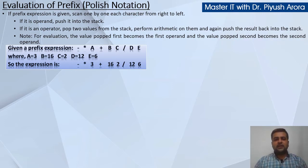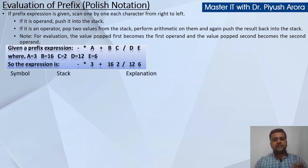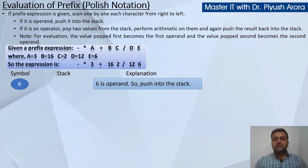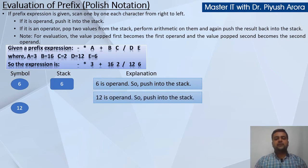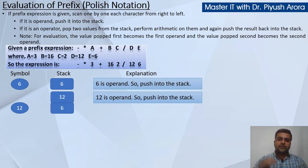It is very simple — step by step dekhenge, aapko samajh mein aa jayega. Symbol, stack, and explanation — aise teen columns bana lijiye. Ek ek symbol hum scan karte jayenge. The first symbol is 6 — 6 is operand, so you have to push it into the stack. Next variable ko scan kijiye; hum right side se scan kar rahe hain. Next variable is 12 — 12 is operand, so push it into the stack. Stack mein pehle 6 hai, uske upar humne 12 ko push kar diya.